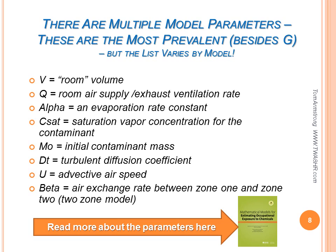There are multiple model parameters, but each set of models has a set of required and some optional input parameters. These parameters describe the situation to be modeled — some are general but some are model specific. Check the book or the model-specific help in IHMOD for more details. These are the conventions: V is room volume; Q is room air supply and exhaust ventilation rate; alpha is an evaporation rate constant; CSAT is a saturation vapor concentration; M0 is an initial mass contaminant emitted as a puff or bolus; D sub D is a turbulent diffusion coefficient; U is an effective air velocity; beta is the air exchange rate between zone 1 and zone 2 in the two-zone model.